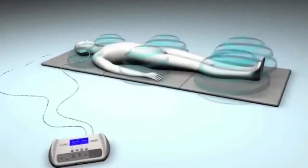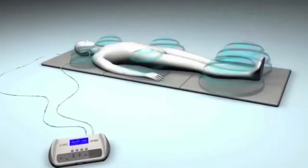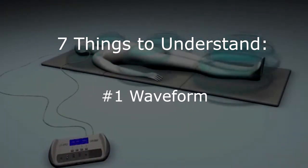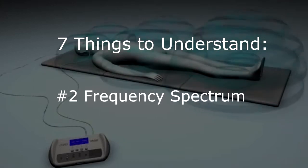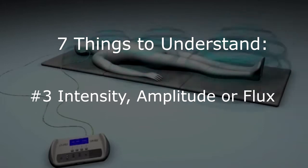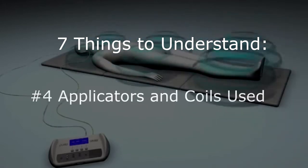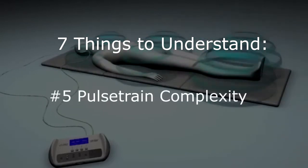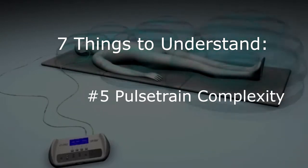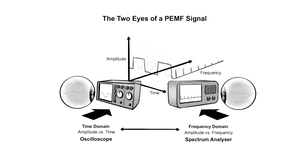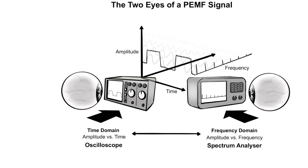To really understand what is the best PMF signal, we need to look at seven things. First is the waveform or signal shape as seen on an oscilloscope. Second is the frequency spectrum as seen on a spectrum analyzer. Third is the intensity or amplitude, or even better yet the magnetic flux. Fourth is the applicators and coils used in the PMF system. Fifth is the pulse strain complexity. Sixth is safety standards. And finally, does it work?